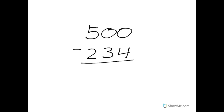All right, we've got this problem here. We have 500 minus 234. And if you remember, whenever we do subtraction, we're always going to start in the ones place. So if we look in the ones place, you see that there's a zero in the top number, the minuend, and there's a four in the subtrahend, or the bottom number. So you have to ask yourself, if I have zero, can I take away four? And the answer is no. And if you remember from regrouping, we would go next door and borrow.